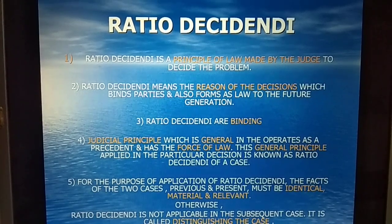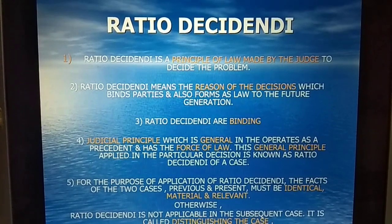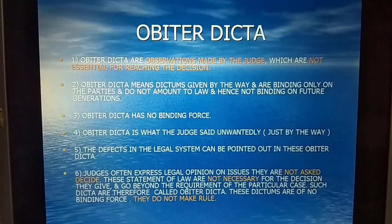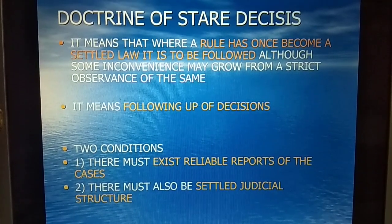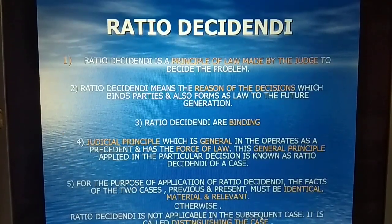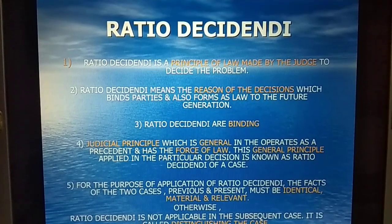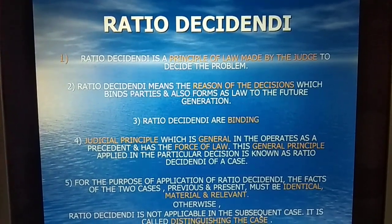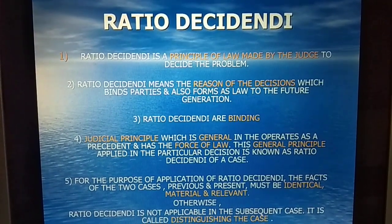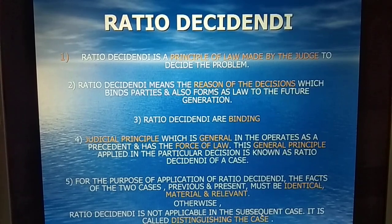Hello friends, welcome to my YouTube channel. In this chapter we are going to learn ratio decidendi, obiter dicta, and doctrine of stare decisis. This is very important for CS Executive new syllabus. You can write only these five points because in the exam you have to remember these points very quickly, so I have made only these five points.